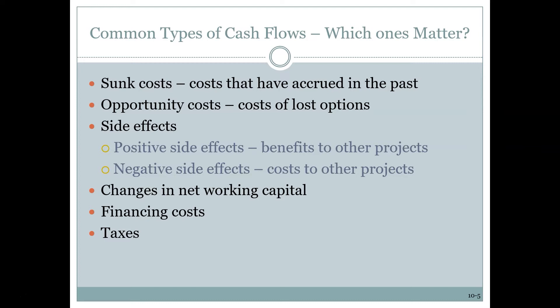The second kind are opportunity costs, and if anything these are even harder — because opportunity costs are the cost of not doing something else. It's like being asked to predict a future that didn't happen. The easiest way to think about it is to return to the land example: I bought a plot of land on King Street for a million dollars. That million dollars is a sunk cost from ten years ago — it doesn't matter and I don't consider it in my new project.